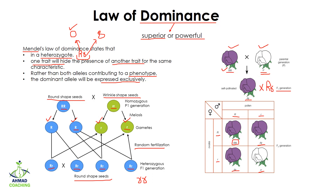We see purple for the capital R capital R genotype; the heterozygotes are also purple because purple is dominant. However, when two small r alleles are present there is no dominant allele, so that plant will be white in color. That was the law of dominance. I hope this lesson is clear; if you have any questions, ask in the comment section. See you in the next video.